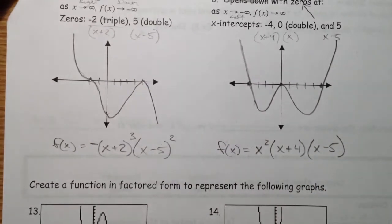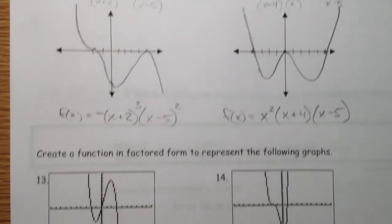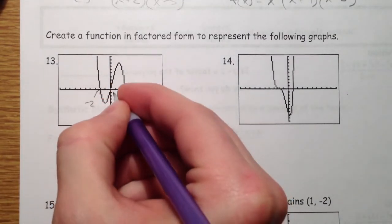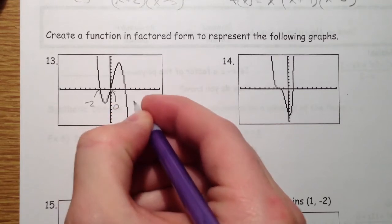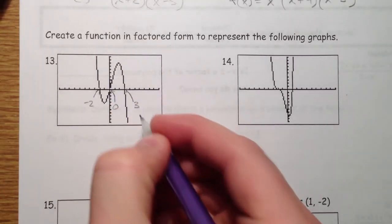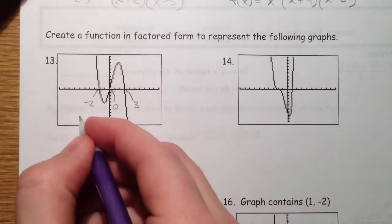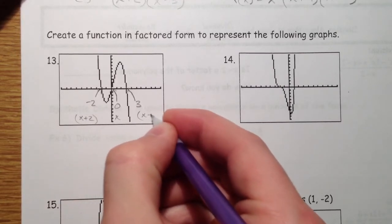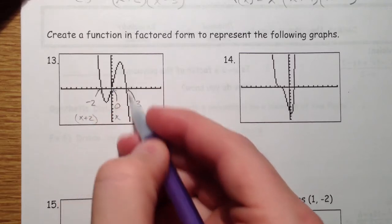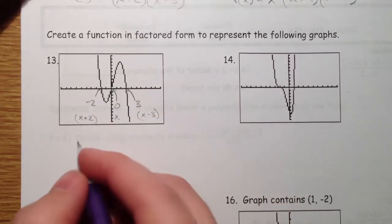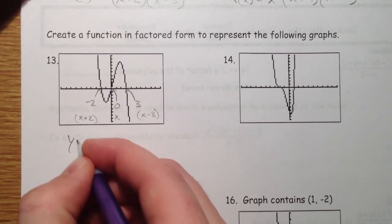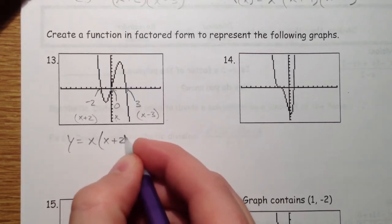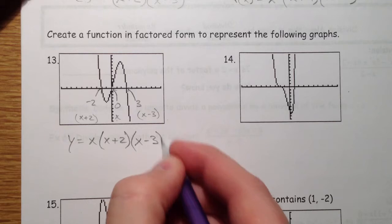So this is really what we're going to do in the next section. We're going to create a function in factored form. So this is negative 2, this is 0, and 1, 2, 3. So x plus 2, x is a factor, x minus 0, and x minus 3. None of them are special. There's nothing other than just crossing going on. And so I'm going to write y equals x, and then I'll do the x plus 2, and then I'll do the x minus 3.